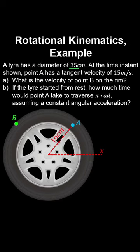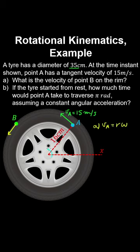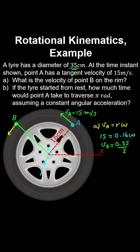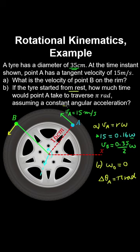A tyre with diameter 35 cm has a tangential velocity of 15 m/s at point A. Part A: knowing V_A = r omega, with the angular velocity pointing out of the screen, and given V_A and the radial distance to A, we calculate omega. The tangential velocity at B equals the radial distance to B (half the diameter) multiplied by that angular velocity. Part B: if the tyre started from rest and point A traverses an angle of pi radians with constant angular acceleration, we use the big five kinematic equations for uniform angular acceleration to solve for time.